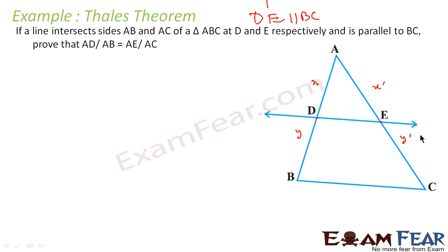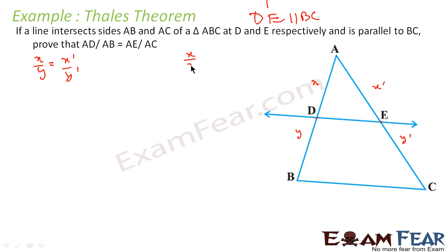Going by the theorem, the basic form is X by Y is equal to X dash by Y dash. We are asked to prove that AD by AB — that is X by X plus Y — is equal to AE by AC — that is X dash by X dash plus Y dash.